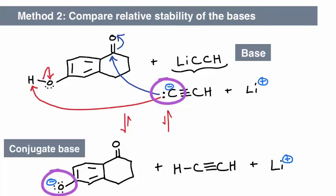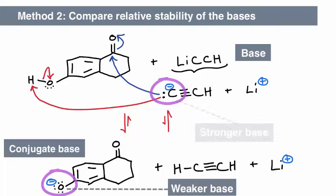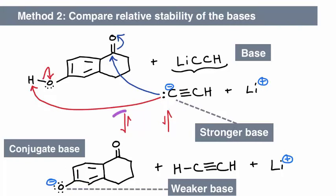These factors, resonance and electronegativity, help to stabilize the conjugate base more than the base, meaning that the phenoxide is a weaker base than the acetylide. Therefore, the acid-base reaction favors the products.